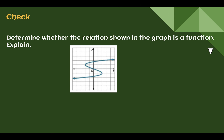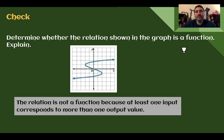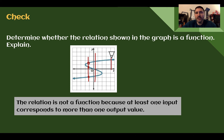Check your understanding: determine if the relation in the graph is a function — explain. This is not a function. There are plenty of places where one input has more than one output. Starting right here, it has one, two, three places — this input goes to three different outputs. Over here it only goes through one, but if it ever goes through more than one place, it is not a function. This went through three different outputs — not a function.